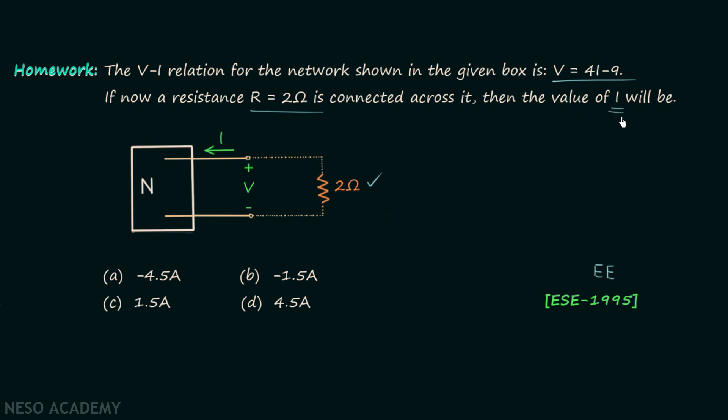So you need to find the value of current I. There are four options. Try to solve this problem and once you have your answer, post it in the comment section. I will end this lecture here, see you in the next one.